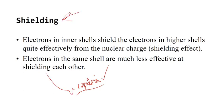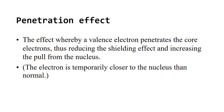You shouldn't use 'shielding' as a justification on a free-response question. The penetration effect is an effect whereby a valence electron penetrates core electrons, reducing the shielding effect and increasing the pull from the nucleus. A 3S electron has the ability to take on positions closer to the nucleus — that existence makes it pull closer to the nucleus than you would expect. In other words, the electron is temporarily closer to the nucleus than it normally would be.